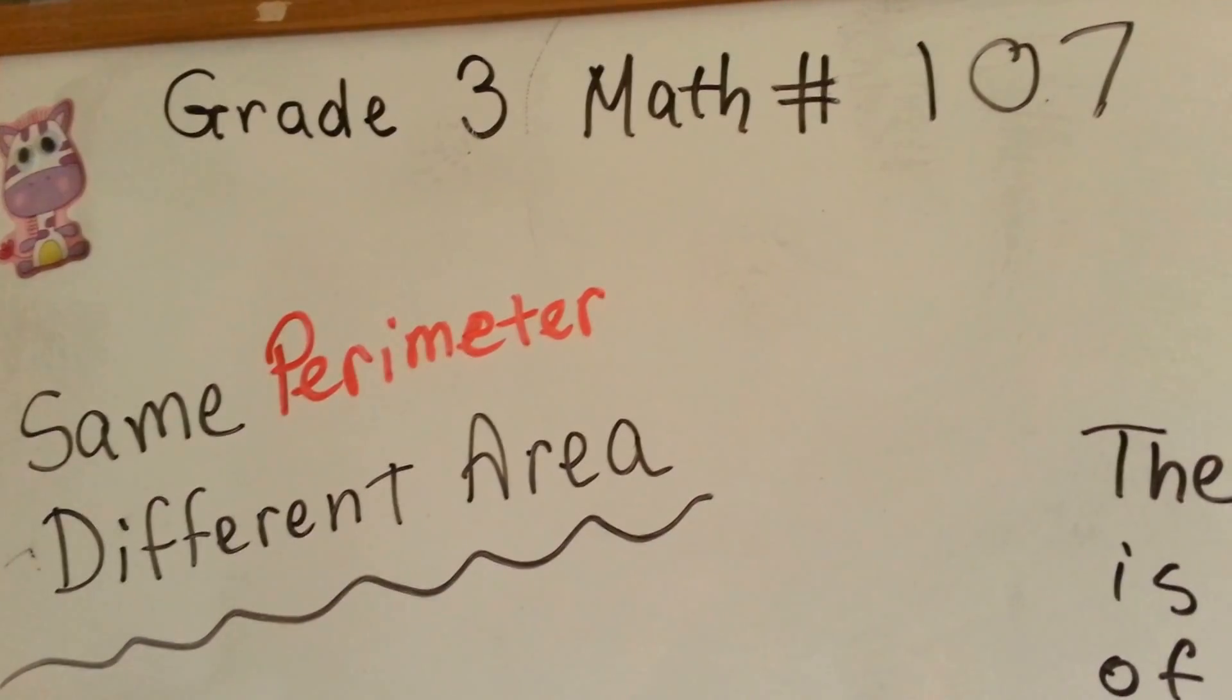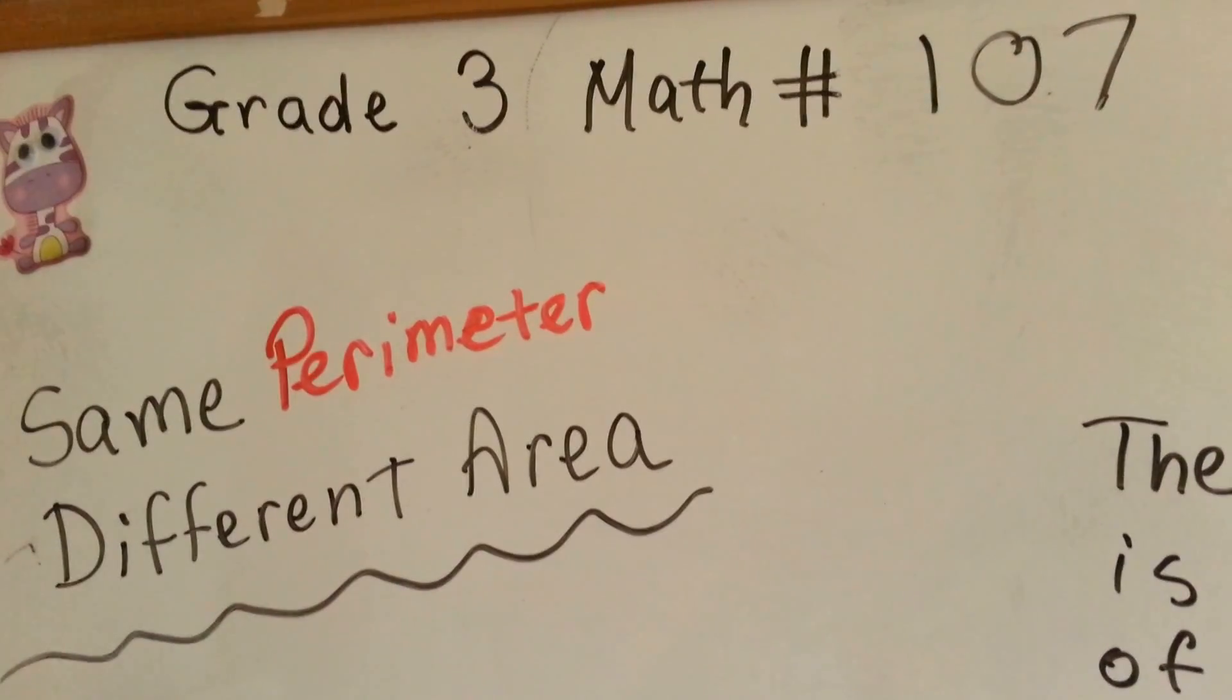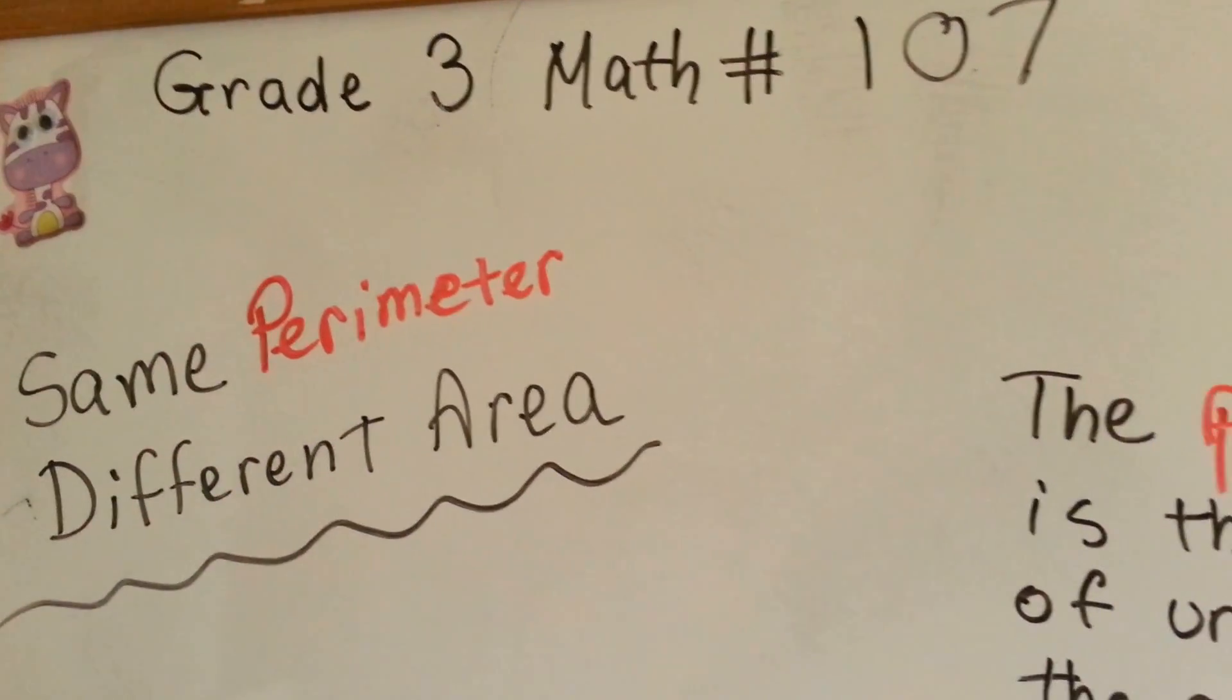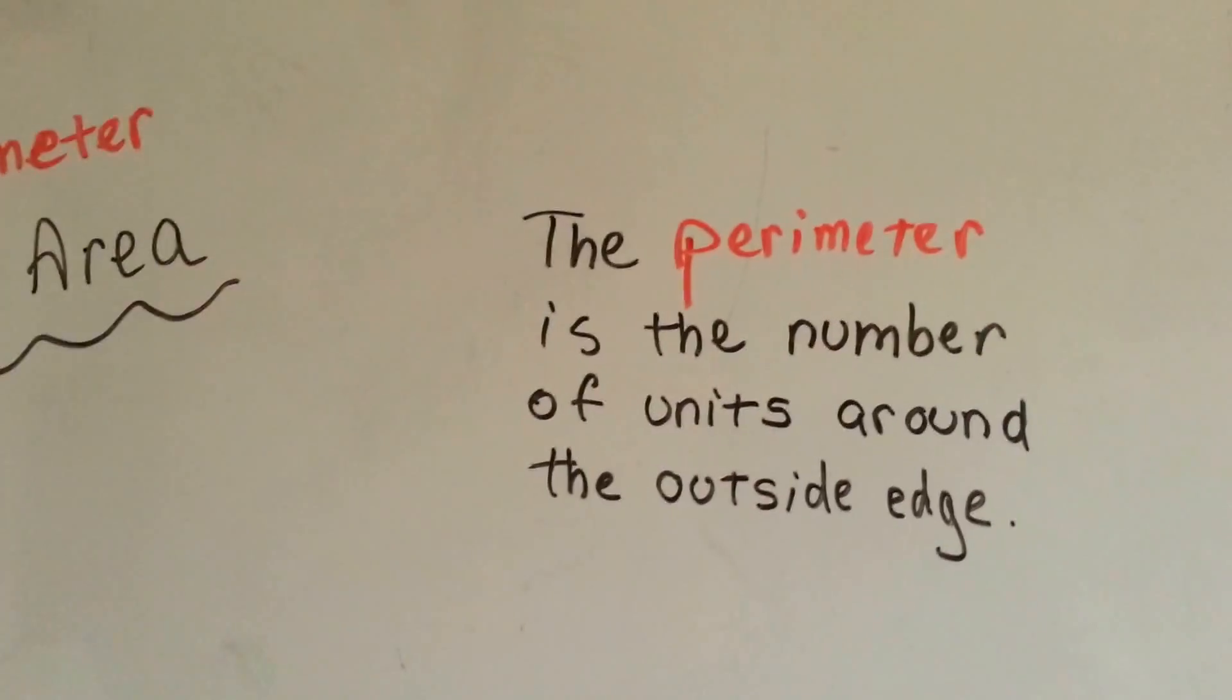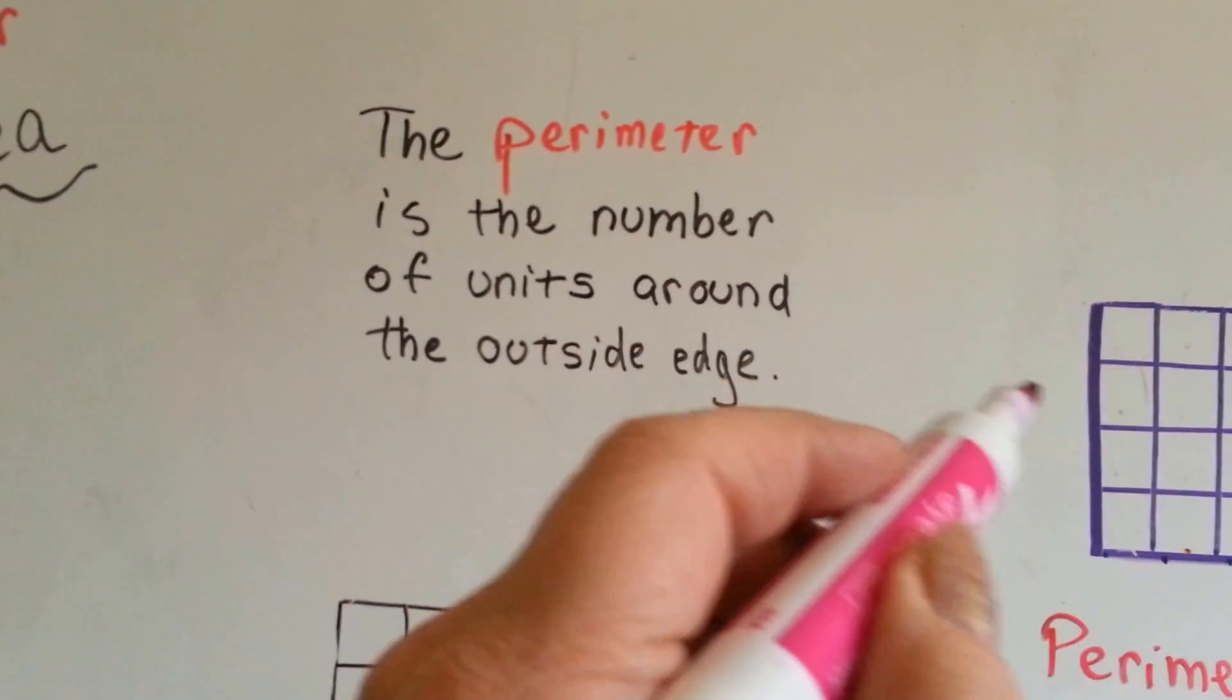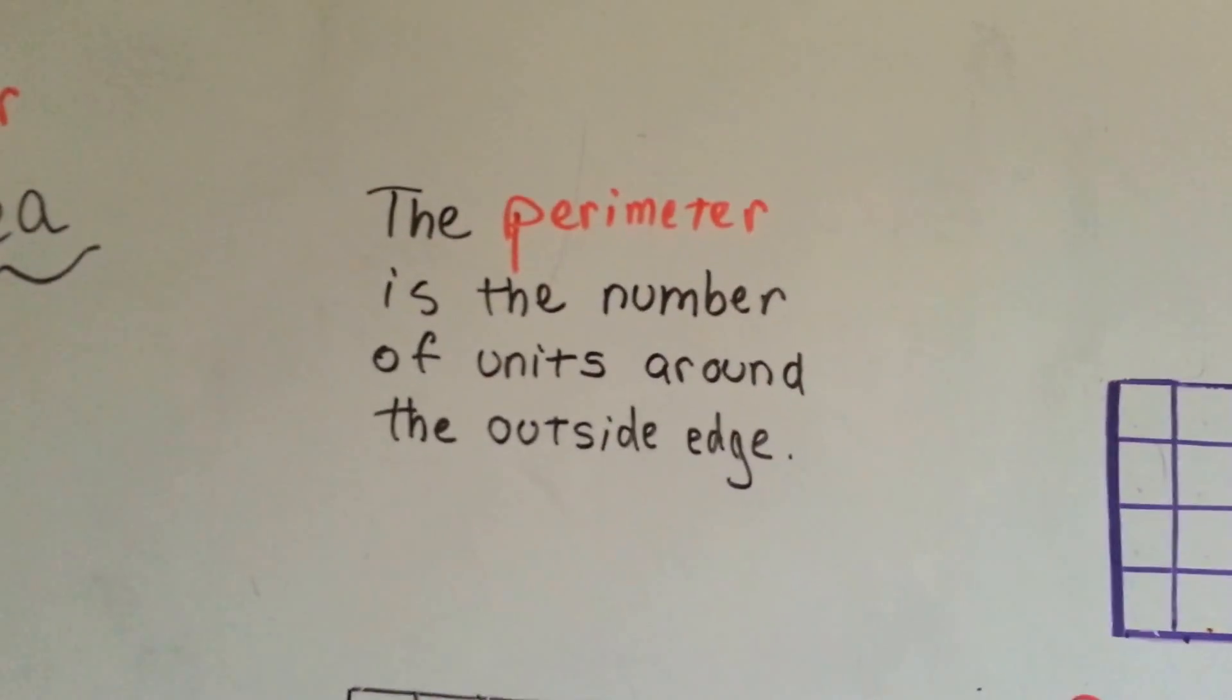Grade 3 math number 107. Same perimeter, different area. Perimeter and area are not the same thing. The perimeter is the number of units around the outside edge. It's the number of line units around the edge.